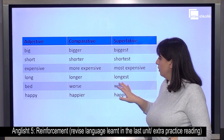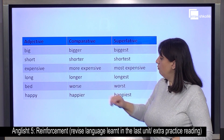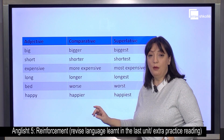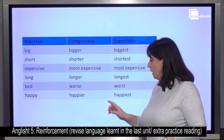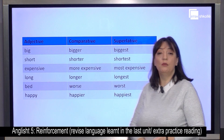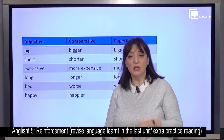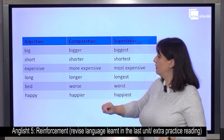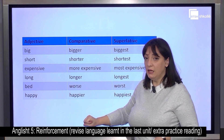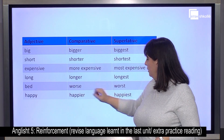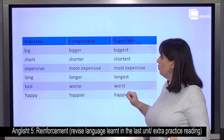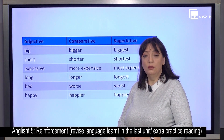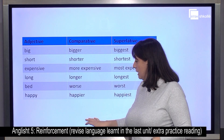Long — longer — the longest. Bad — worse — worst. Happy — happier — happiest. Do you remember these two forms? Careful with the irregular adjectives — the parregullt. Bad — worse — worst. And the other one: good — better — best.